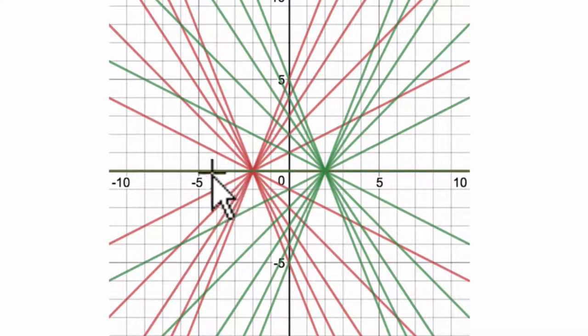We're going to use the y-intercept and the slopes to look for a pattern in the red lines and the green lines, and then try to write a general equation based on those patterns.